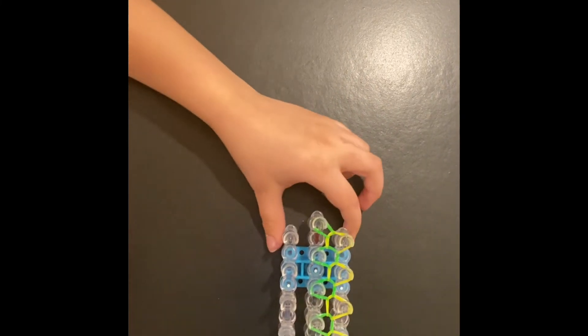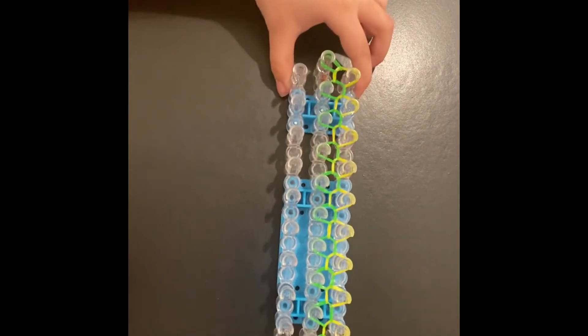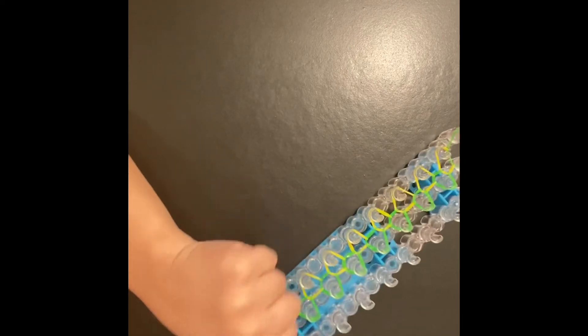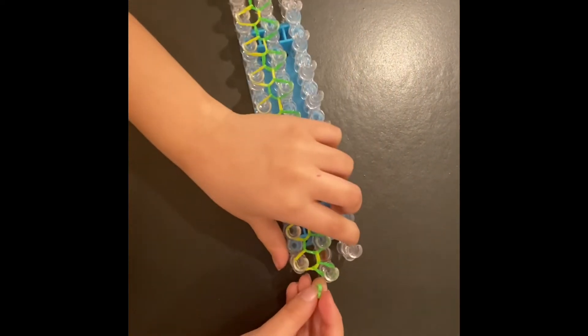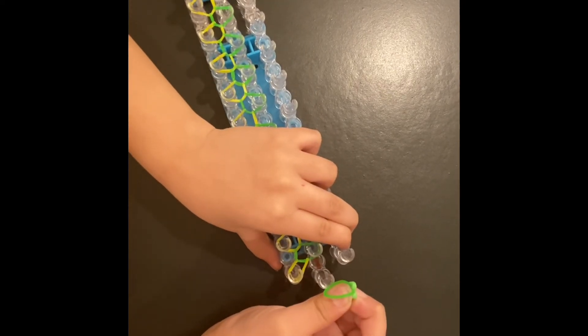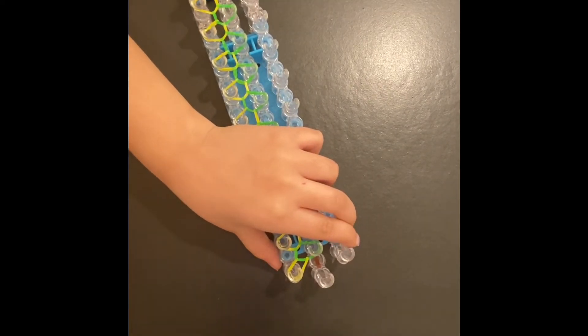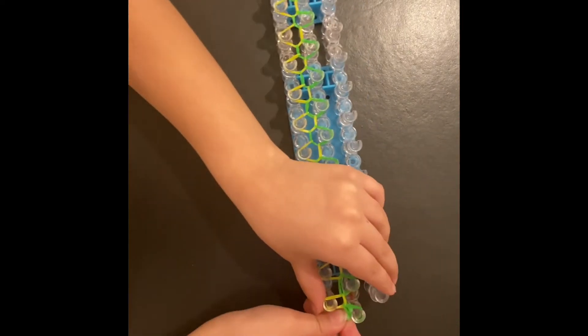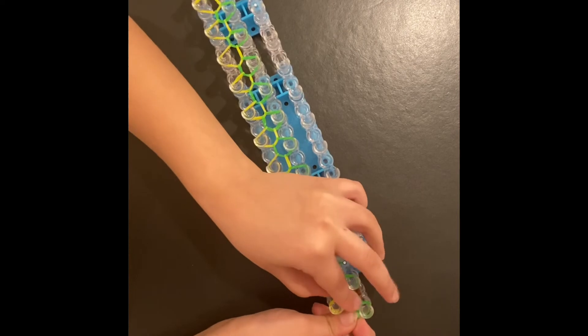When you're done, it should look like this. Then take this clasp and start from here, and hook this clasp. Technical difficulties. Okay, now hook this clasp on here.